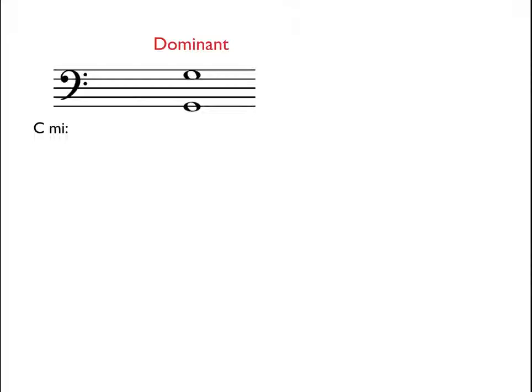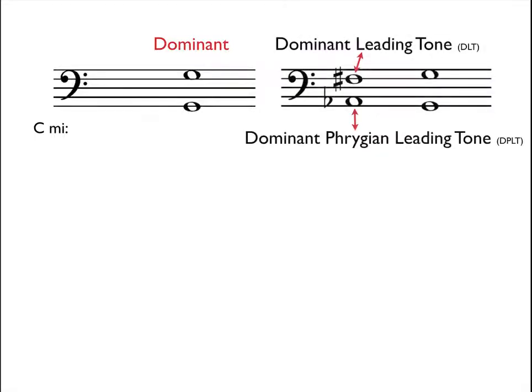To create an augmented six chord: first, find the dominant and write it in an octave. Here we're in C minor, so the dominant is G. Next, add the dominant leading tone — that's a half step below the dominant — and the dominant Phrygian leading tone — that's a half step above the dominant — and this creates the augmented sixth.